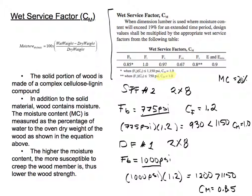For the 2x8, our size factor is 1.2, so we multiply our bending stress times our size factor CF. For the SPF number two, I'm getting 930 pounds per square inch. If you look at the footnote, it's less than 1,150, so our wet service factor is going to stay as 1.0 even though the moisture content is more than 19%.